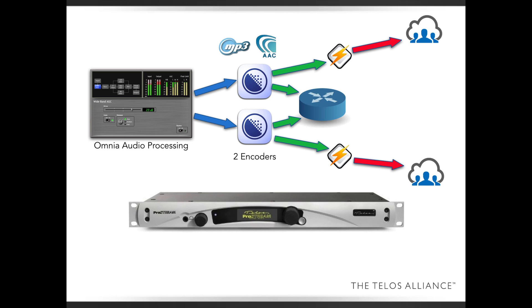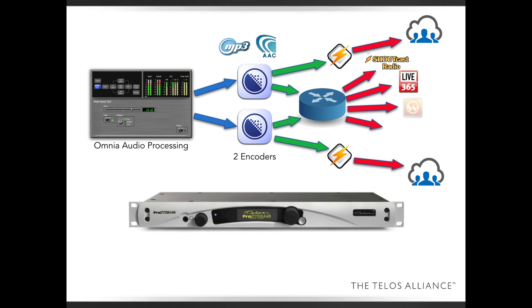The real way that you want to stream out to the rest of the world is through content distribution networks, or CDNs. Inside the ProStream there's a routing matrix, and you can take either encoder and assign it to four different outputs. You can set the parameters for these outputs for the different kinds of streaming servers that exist — for example, shoutcast, icecast, Live365, a Wowza server, or even a CDN like Akamai. You have choices here and can select the correct one for your chosen content distribution network.